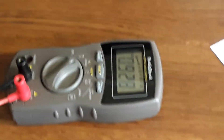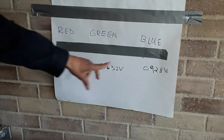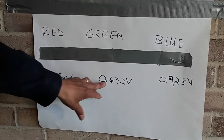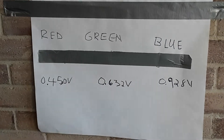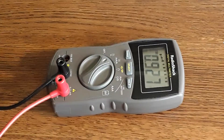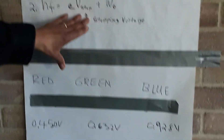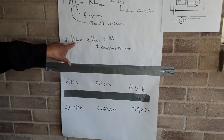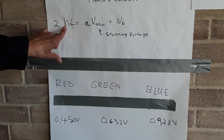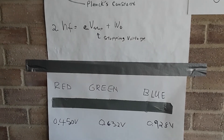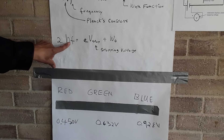So as we stated before, the higher the frequency, the higher the stopping voltage. With the red filter the stopping voltage was 0.450 volts, the green was 0.632 volts, and the blue was 0.928 volts. This verifies the equation — higher frequency means higher stopping voltage. You can plot this on graph paper, take the slope of the graph, and solve for Planck's constant, which is what you'll be doing in this lab.